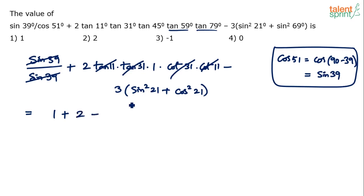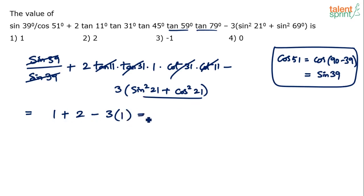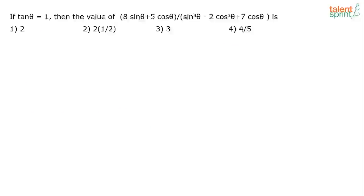We now have 1 + 2 - 3×(sin²21 + cos²21). Using the identity sin²θ + cos²θ = 1, sin²21 + cos²21 = 1. So: 1 + 2 - 3×1 = 3 - 3 = 0. The answer is option 4.